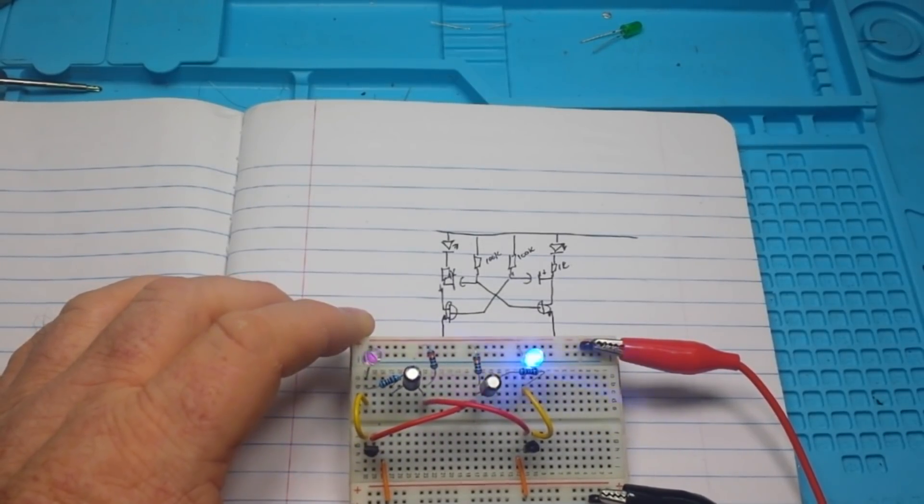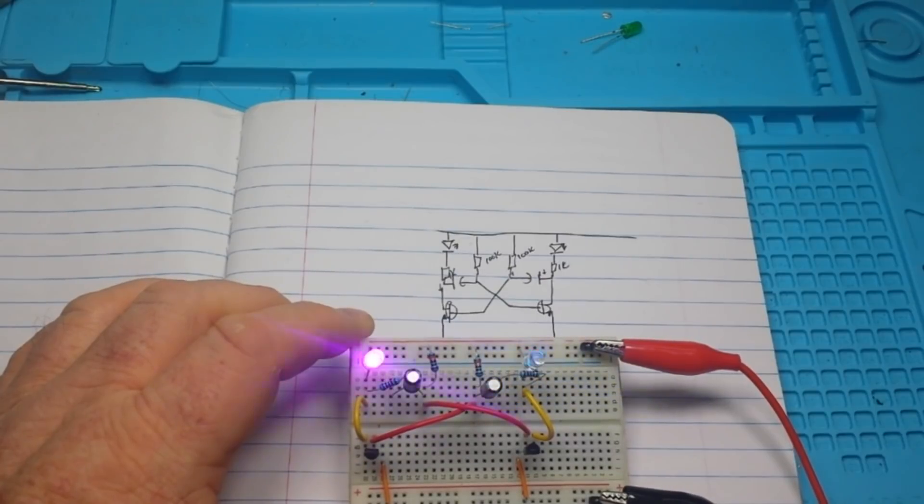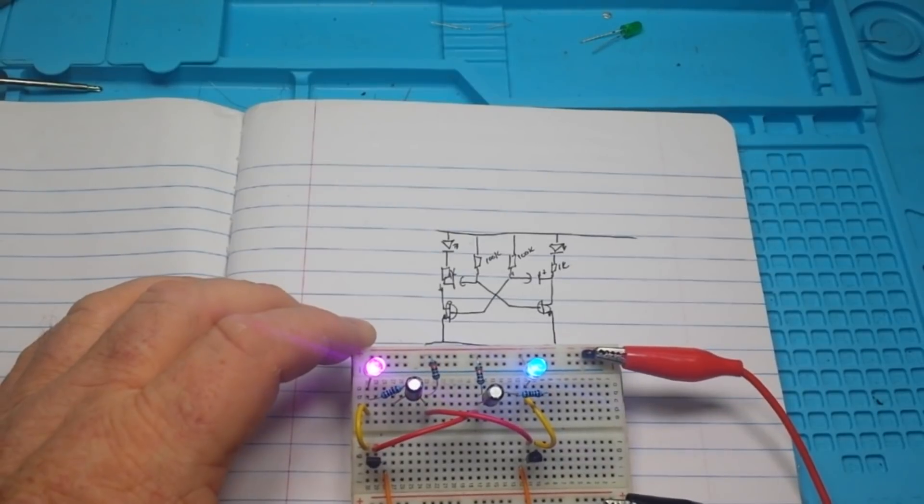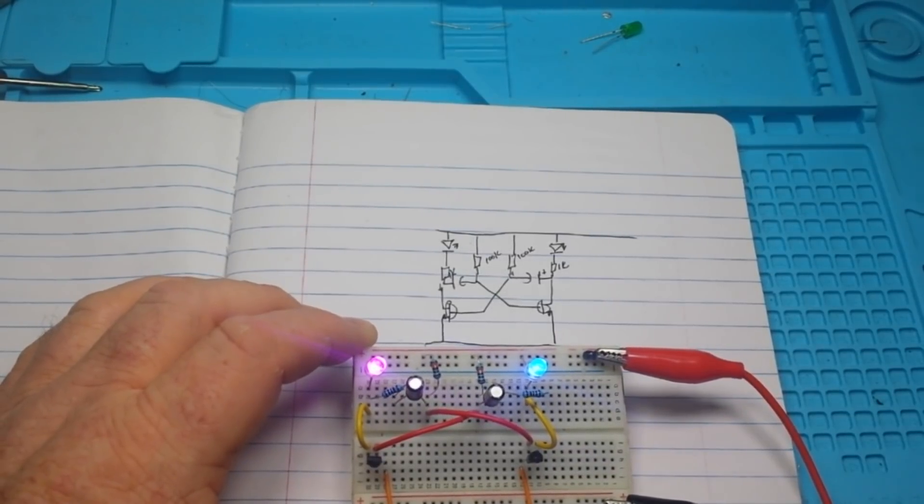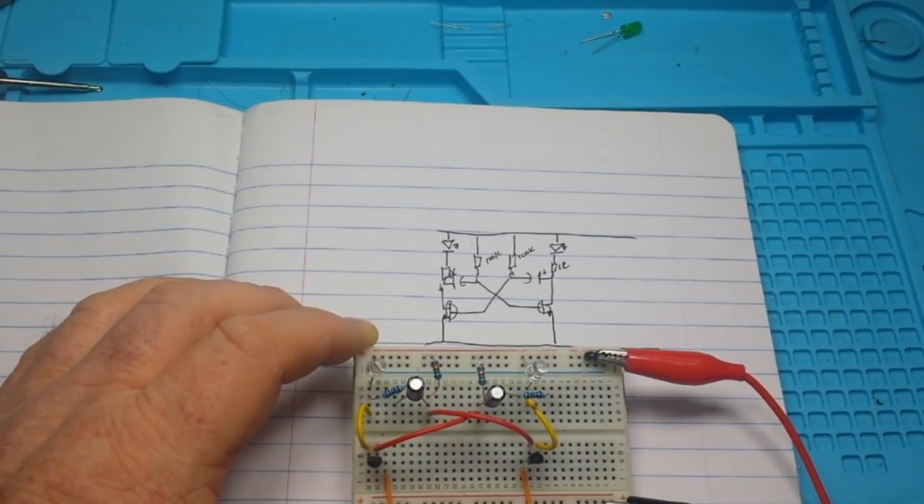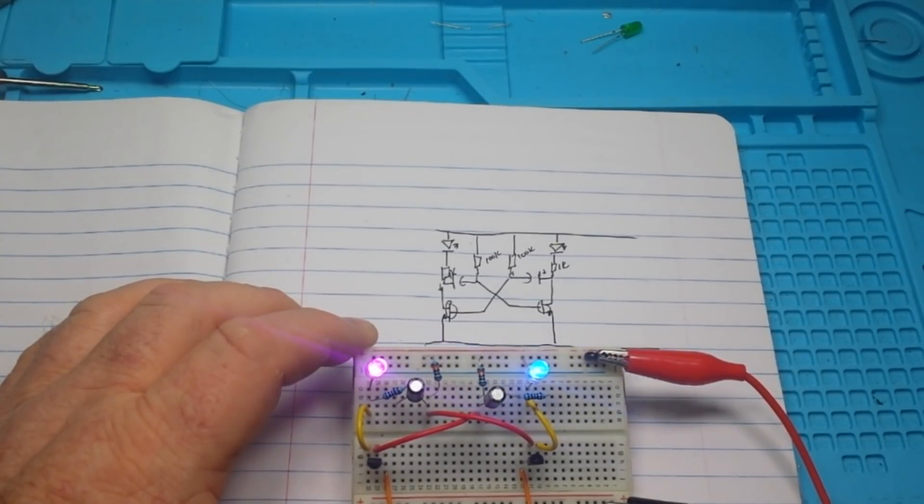The super simple relaxation oscillator, the blinky blink. It can be very fun, buy yourself a cheap kit and just play around with electronics. Change things around, put in different values of capacitors, change the values of the resistors and see what happens.